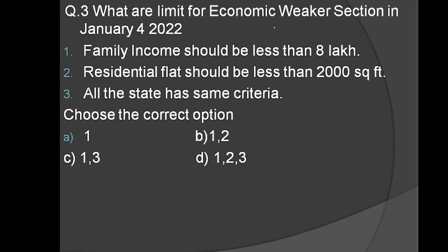What are the limits for the Economic Weaker Section as of January 4, 2022? Family income should be less than 8 lakh — yes, correct. Residential flat should be less than 2000 square feet — no, the correct limit is 1000 square feet. All states have the same criteria — no, every state has different criteria as per their own requirements. So the correct option is the first one only.